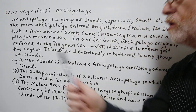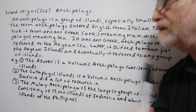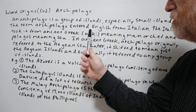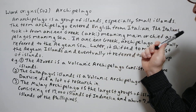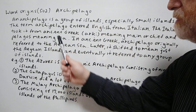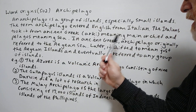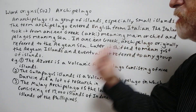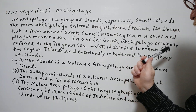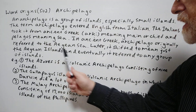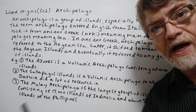The term archipelago entered English from Italian. The Italians took it from ancient Greek: archi meaning main or chief, and pelagos meaning sea. In ancient Greek, archipelago originally referred to the Aegean Sea. Later it shifted to mean just the Aegean Islands, and eventually it referred to any group of islands.